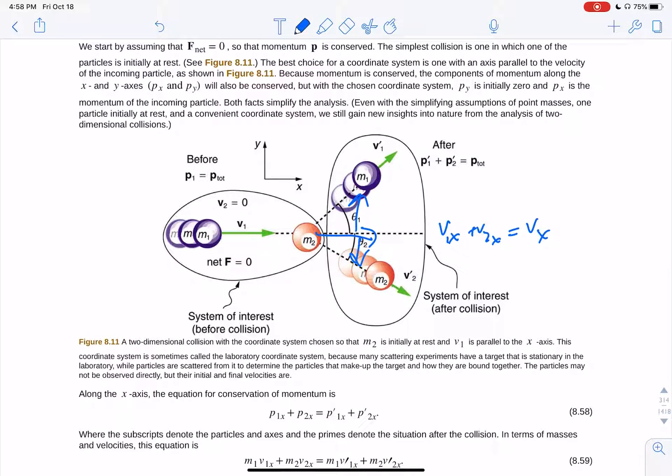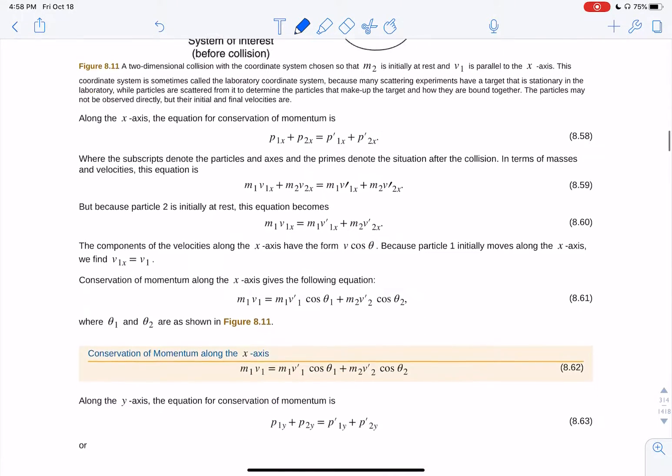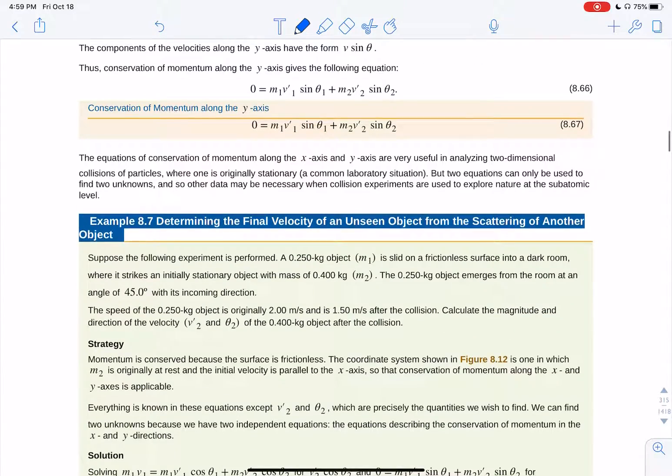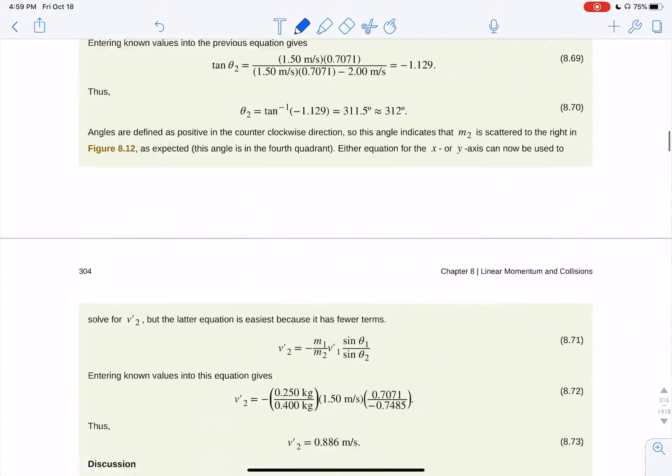And then you know that the Y components of the velocities, V1Y, has to equal V2Y because you had no initial momentum in the Y direction beginning. And so you better have no momentum in the Y direction at the end. So in order for them to move off in the opposite directions, they have to have that conserved. So go through that to figure out how to do those problems.